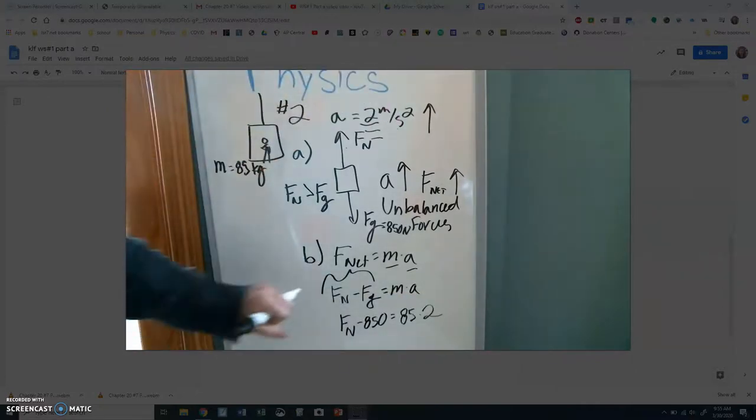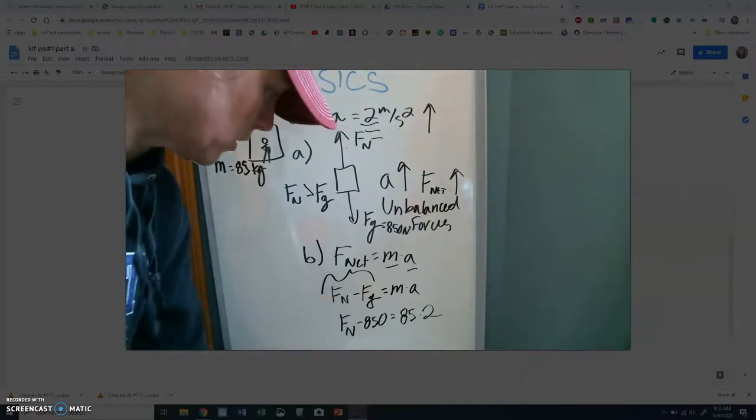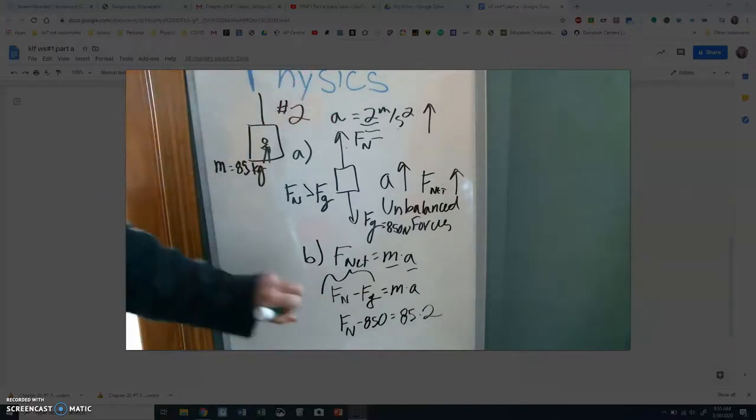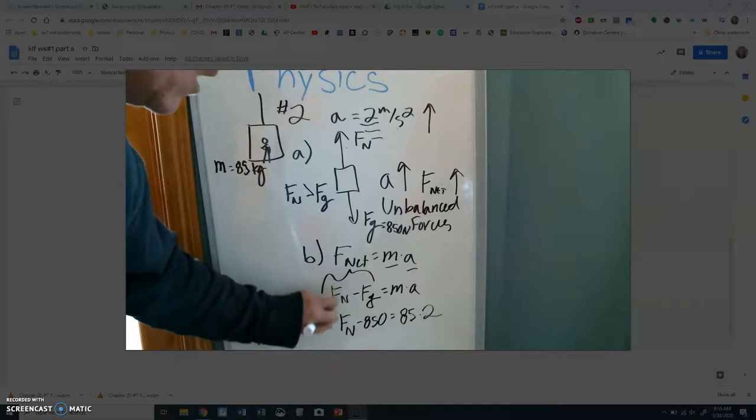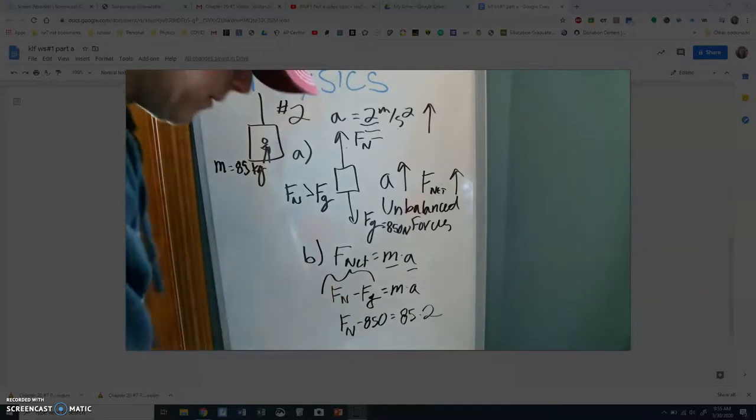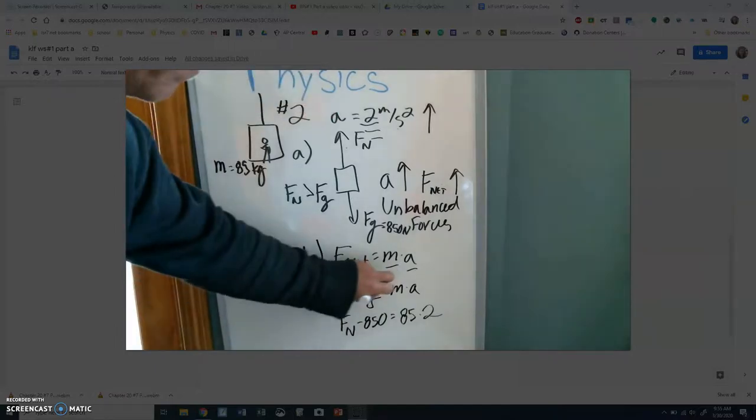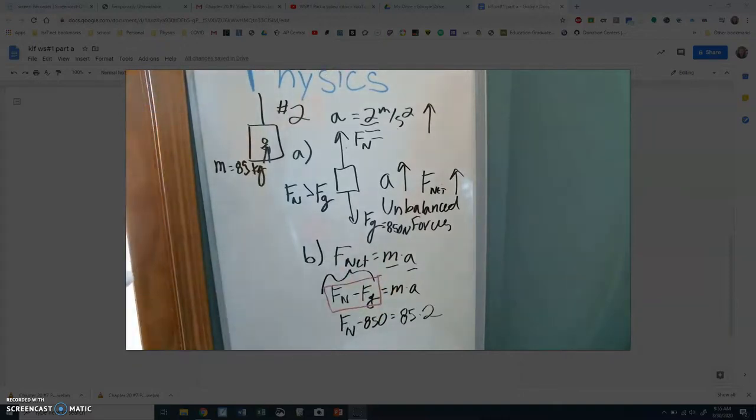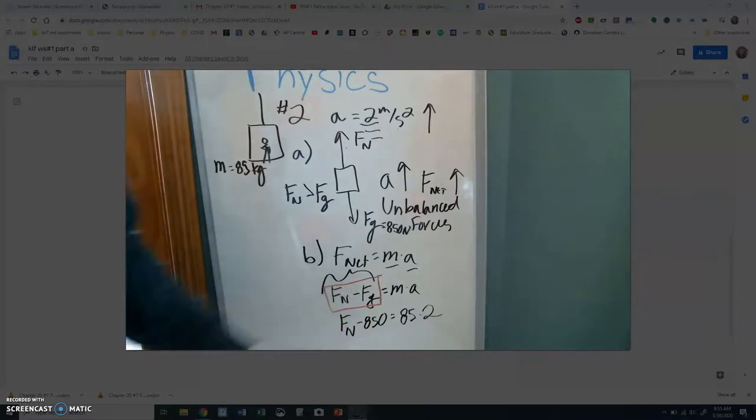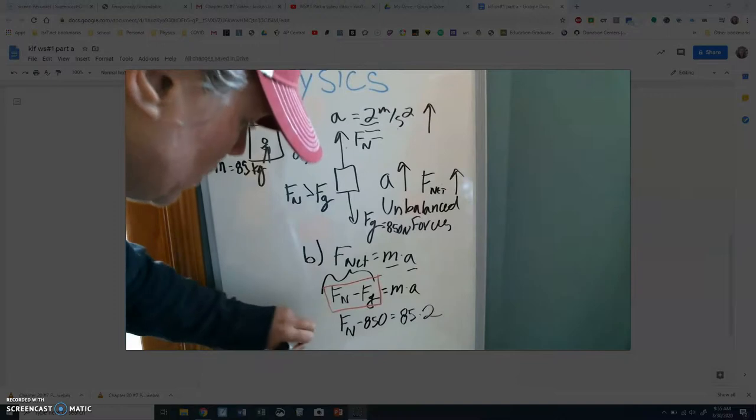So, as far as the equation for our vertical forces, part B, oh, looky there. Part B is basically looking for this. Force normal minus force gravity equals mass times acceleration. So, once we've got that, I guess we're really on to part C.